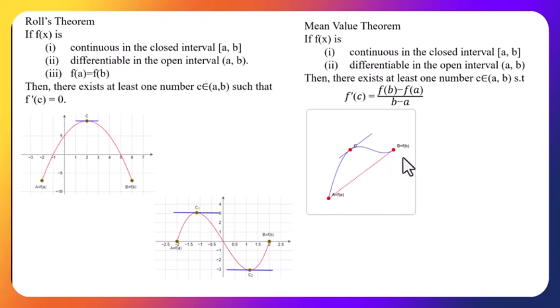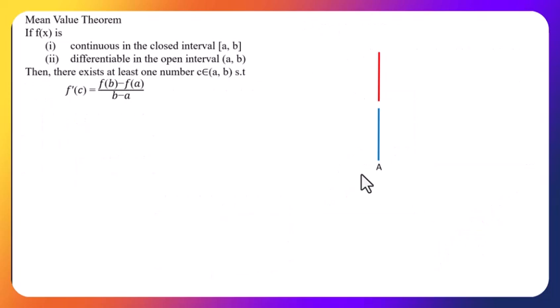Ahile Mean Value Theorem ma chai bindu a ma bhayeko functional value ra bindu b ma bhayeko functional value barabar hunna jaroori chainya. Tesle bindu a ra bindu b lai jodne line x-axis sanga samanantar hune guarantee chainya. Tesle bindu a ra bindu b lai jodne line ko slope jati ho Mean Value Theorem sanga. Yasto bindu 1 wa 1 bhanda badi pani bhettna sakchha. Now let's take the proof of Mean Value Theorem.